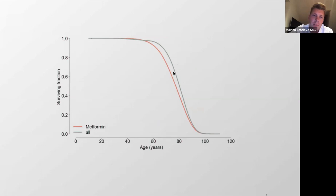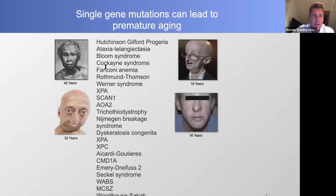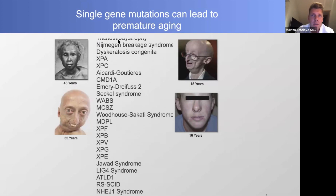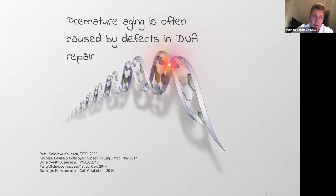One of the first drugs we looked at was metformin. Across the entire population it's associated with lifespan shortening, but giving metformin at age 70 is associated with lifespan extension, though the survival curves cross over after three to five years, possibly due to the underlying diabetic condition. Aging can be influenced by drugs, but also by genes — there are a number of premature aging diseases where patients inherit a single gene mutation and age more rapidly.